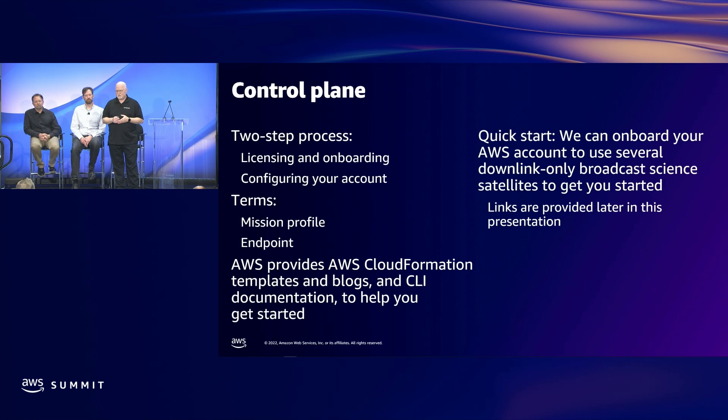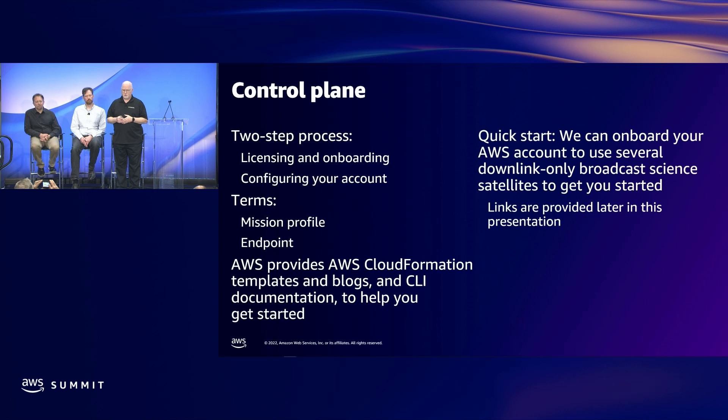Before you can begin using the AWS Ground Station service, you need to have at least one satellite onboarded to your account. For broadcast satellites, AWS has licensing in place, so we can onboard them for you quickly. For onboarding your own satellites, you first need to license them and provide us with the information we need to license our sites — we need to license the satellite itself and the ground station sites you want to use, and we can provide you with a template for that process.